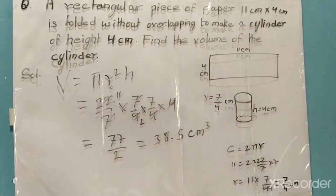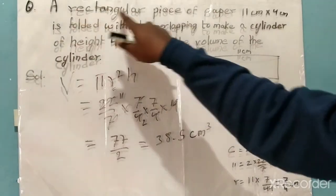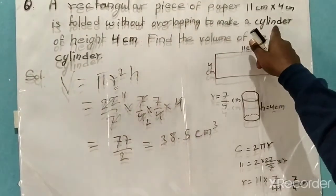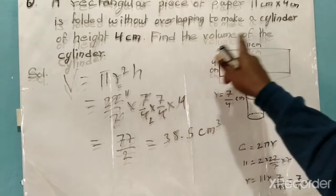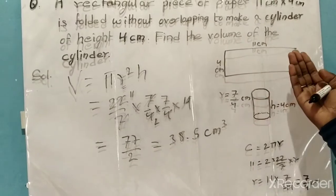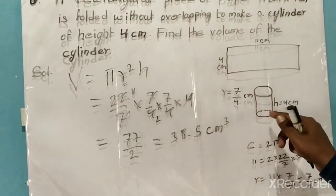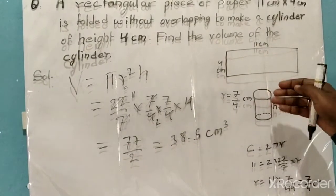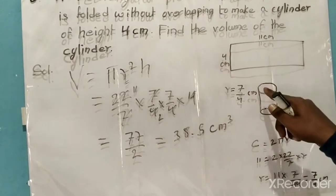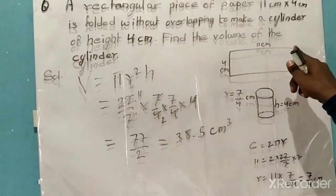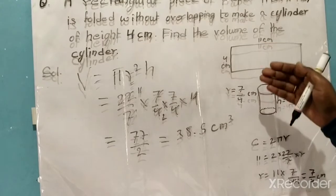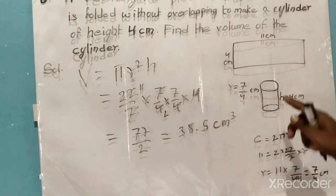Let's revise once more. A rectangular piece of paper of 11 centimeter by 4 centimeter is folded without overlapping to make a cylinder of height 4 centimeter. When we fold the paper it forms a cylindrical shape. The height is 4 centimeter and the circumference is 11 centimeter, since the length of the paper is 11 centimeter.